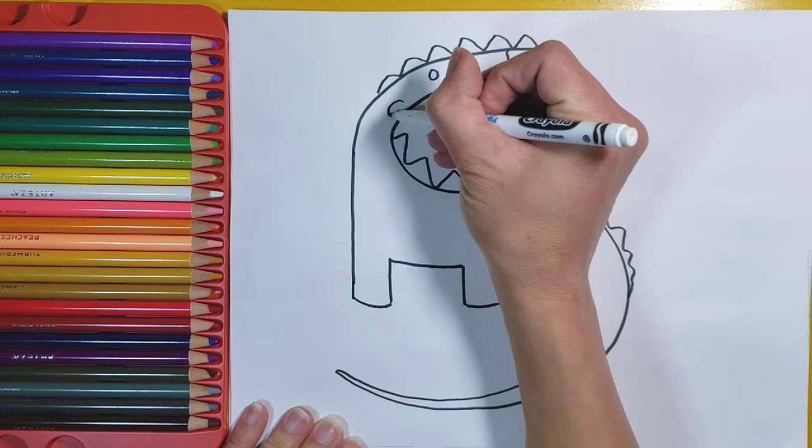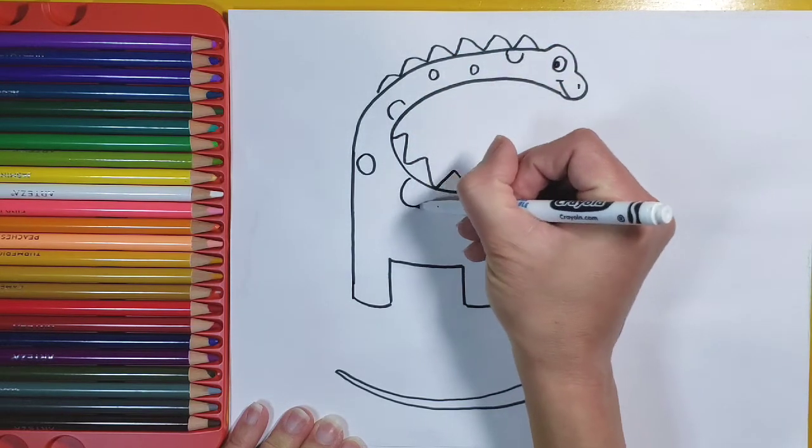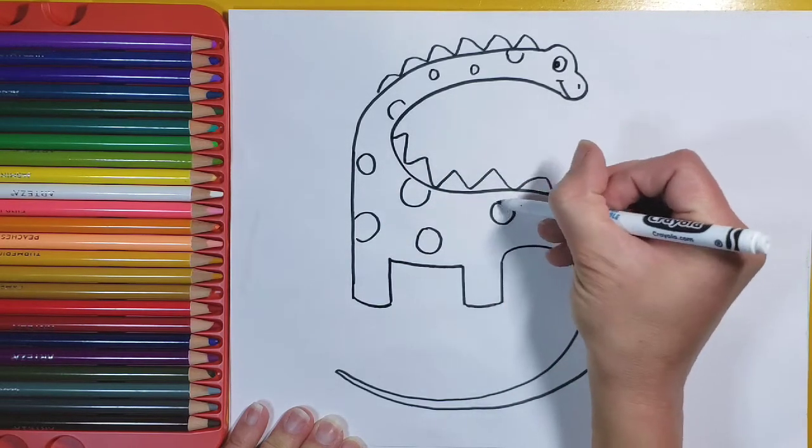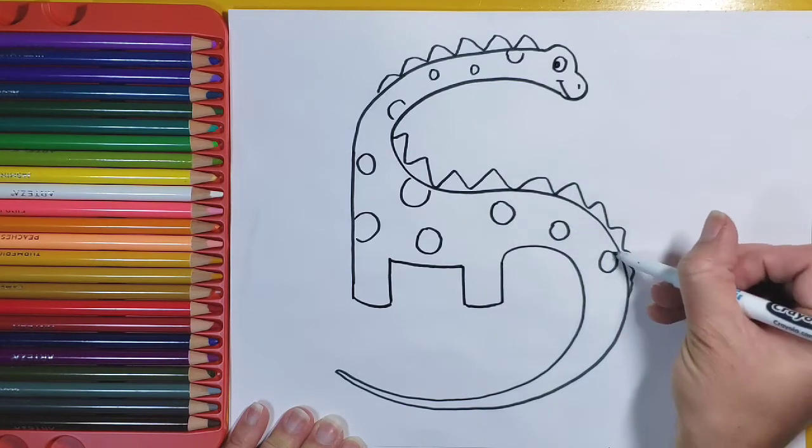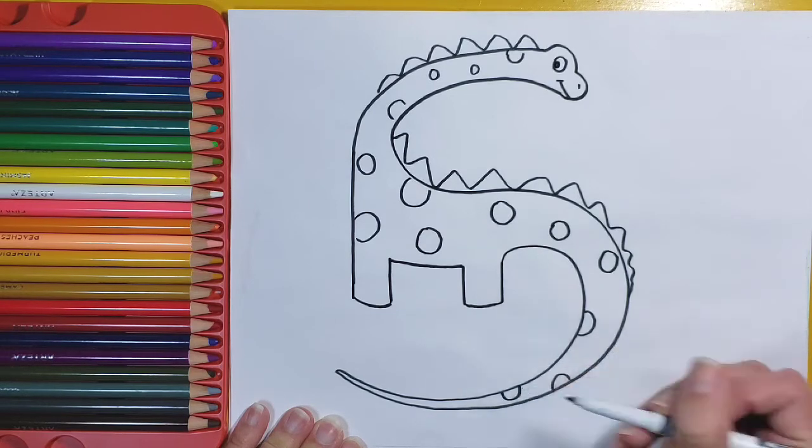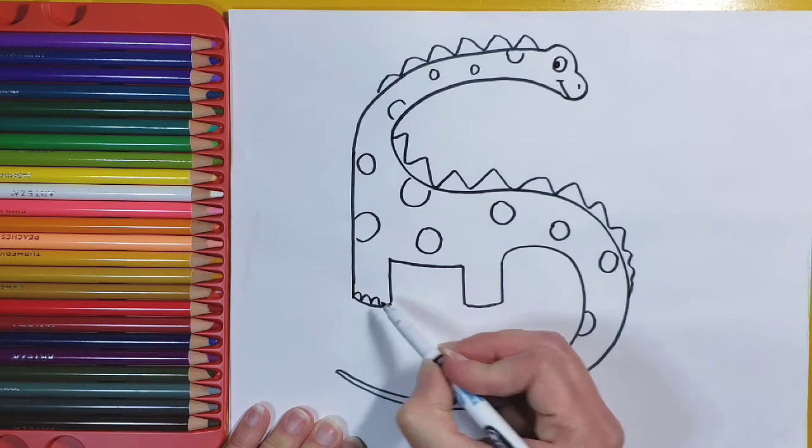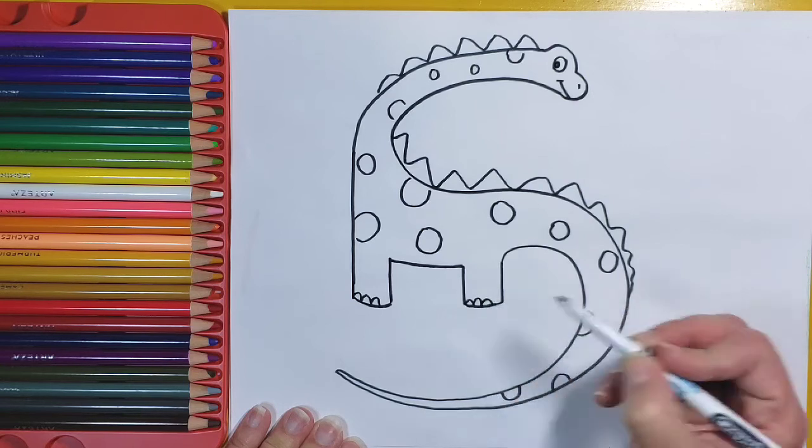And I will decorate my dinosaur like that. And then the only other thing that I would do is maybe give them kind of toenails similar to that of an elephant. So I just kind of do these little one, two, three little hooks on the bottom, kind of like you're doing an M a couple times.